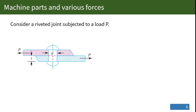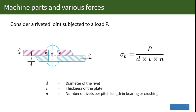Let's consider a riveted joint subjected to a load P as seen in this figure. The area of interest subjected to bearing stress is d times t, where d is the diameter of the rivet and t is the thickness of the plate. Hence, bearing stress is defined by the equation: sigma_b equals P divided by the product of d times t times N.